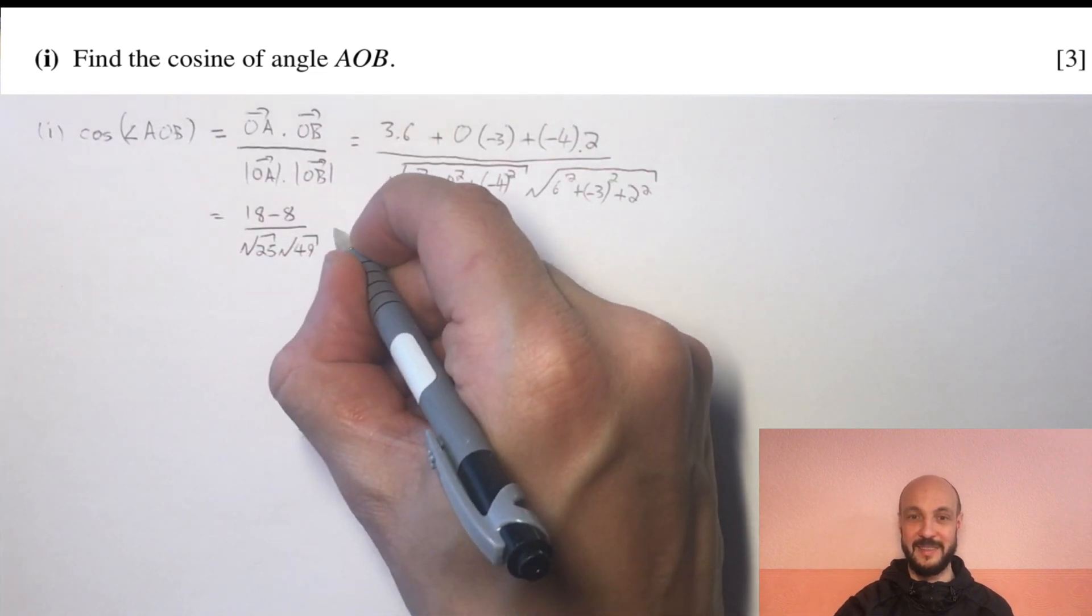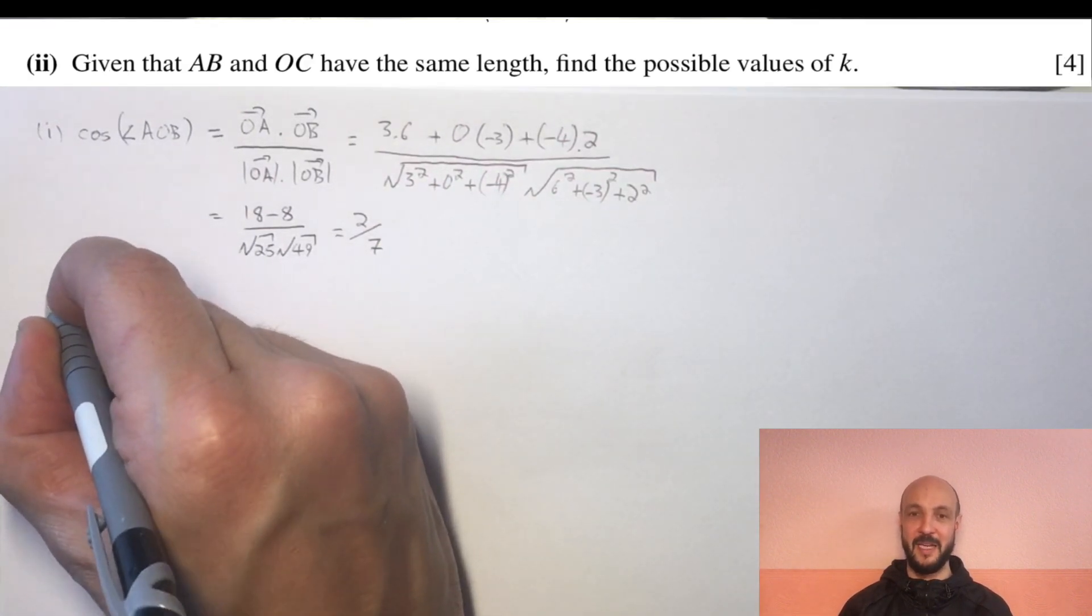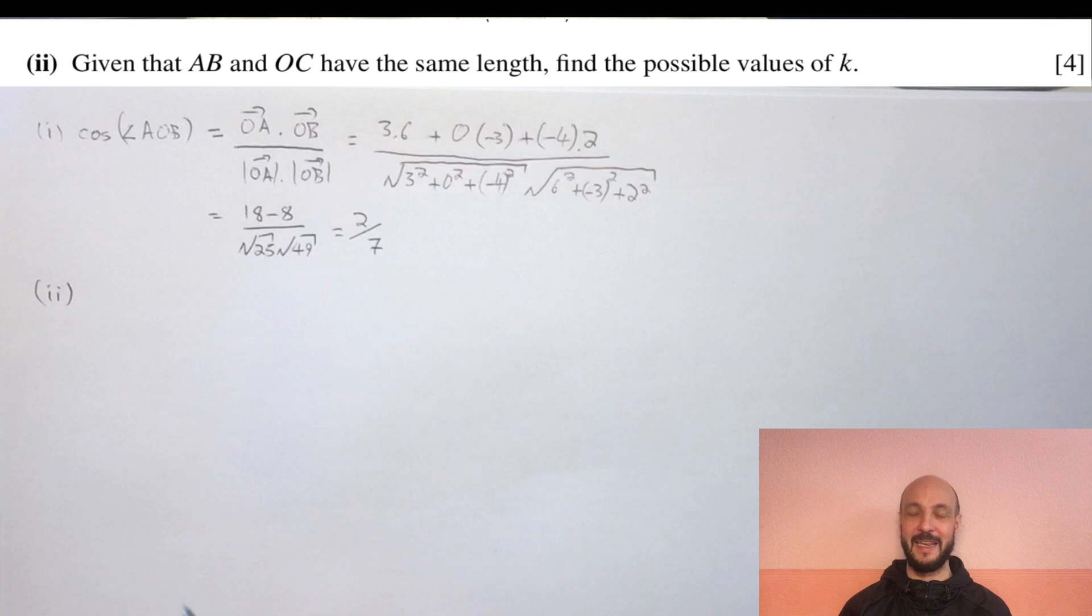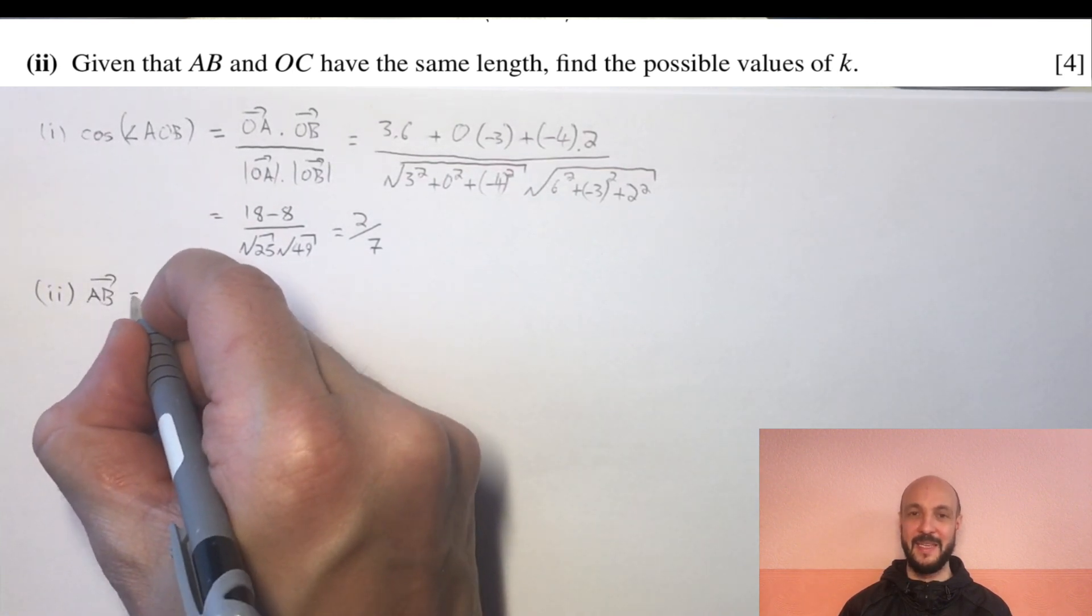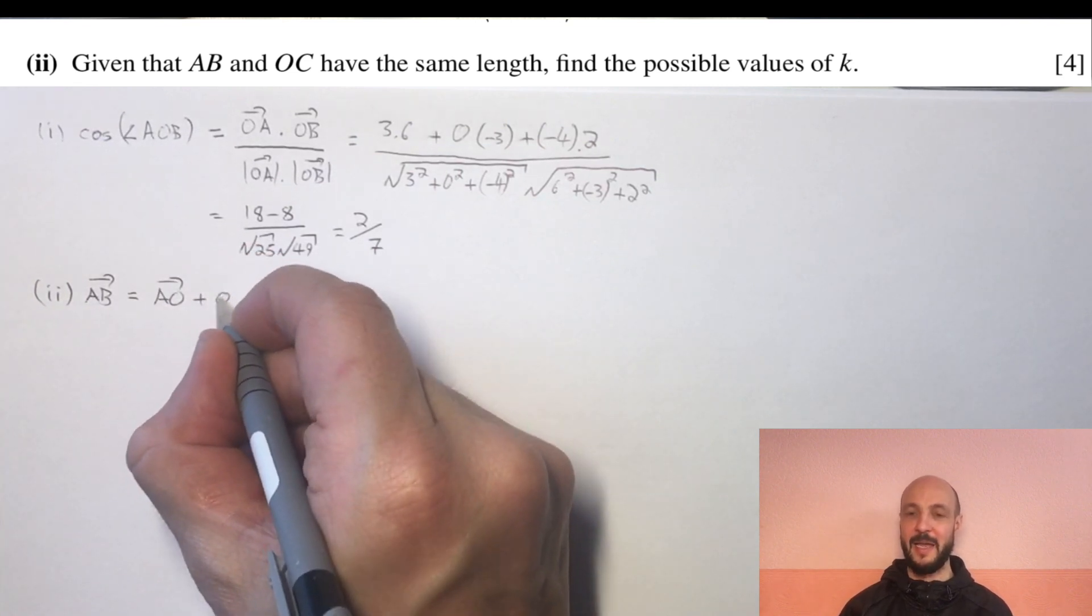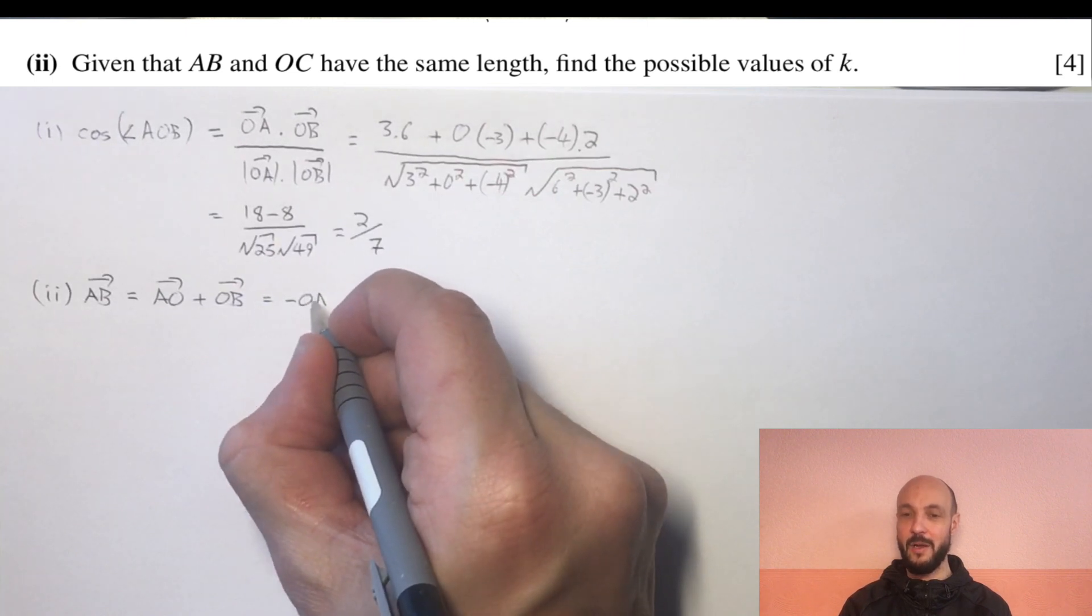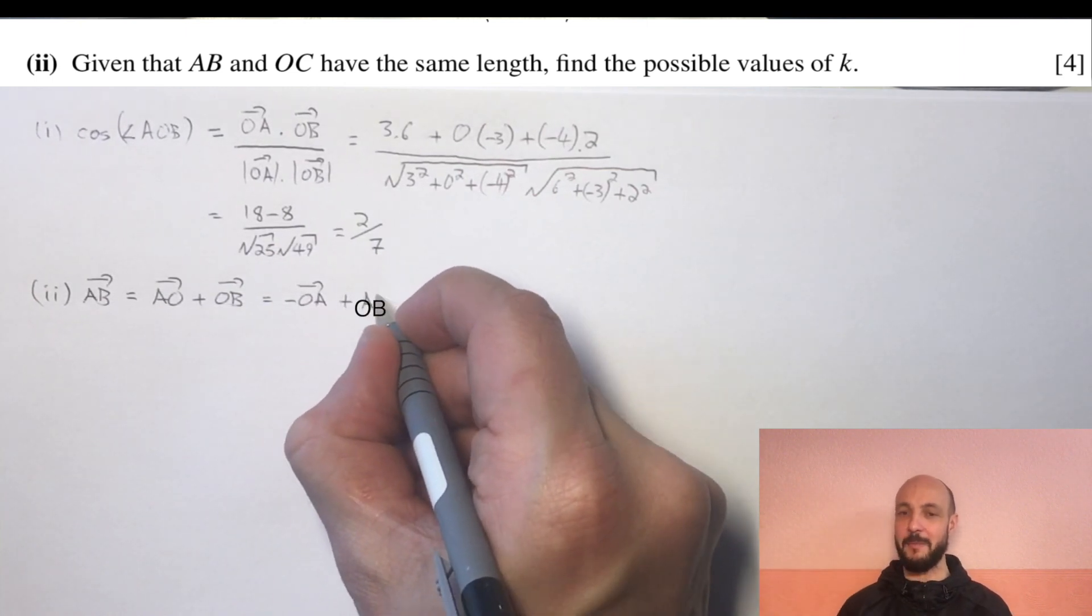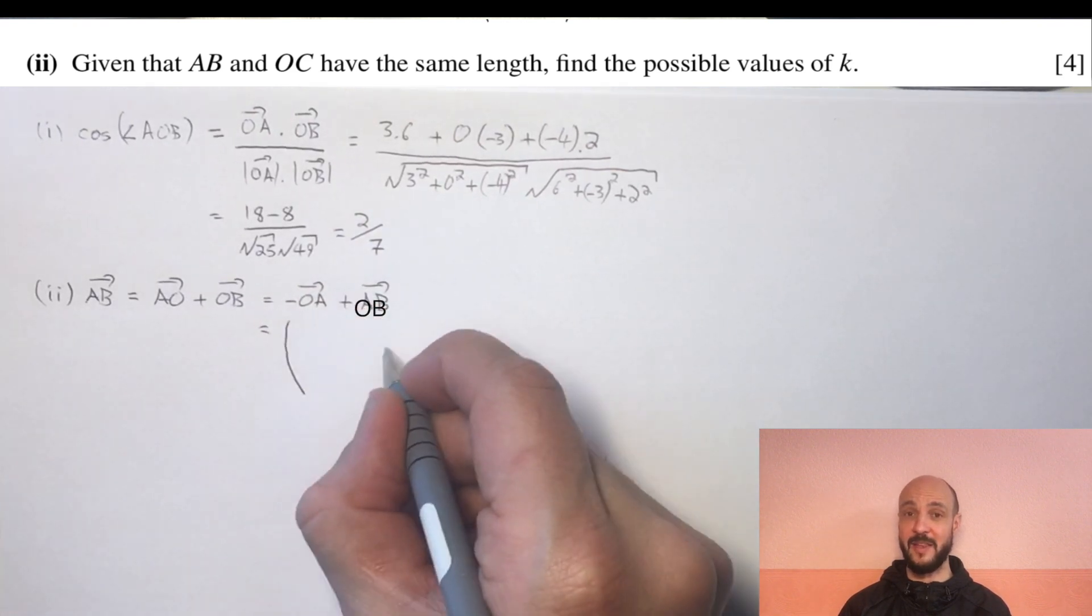Now the second part wants us to find the values of K given that AB and OC have the same length. First, if we think about AB, it's going to be minus OA plus OB because if we minus OA, that's AO plus OB, which gives us AB.